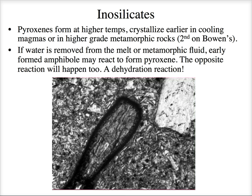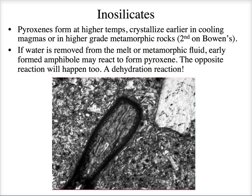Here's a hornblende phenocryst inside an andesite or dacite — a dacite is just a little more silica-rich than andesite. Surrounding this hornblende crystal is a rim of finely granulated pyroxene and some iron oxides — we call that a reaction rim. If you take a magma that was growing hornblende — which requires water — and then dehydrate the melt by letting gases release as the magma moves up to shallow pressure, the hornblende is no longer stable.